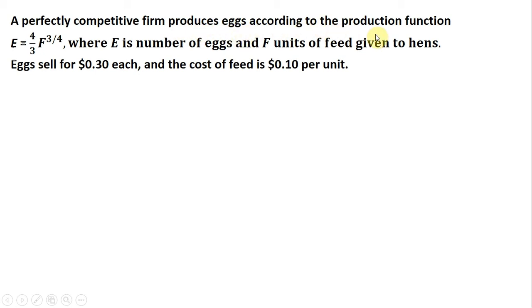The firm has a production function for eggs given by the formula E = (4/3)F^(3/4), where E is the number of eggs and F is units of feed given to hens. Eggs sell for $0.30 each, and the cost of feed is $0.10 per unit.